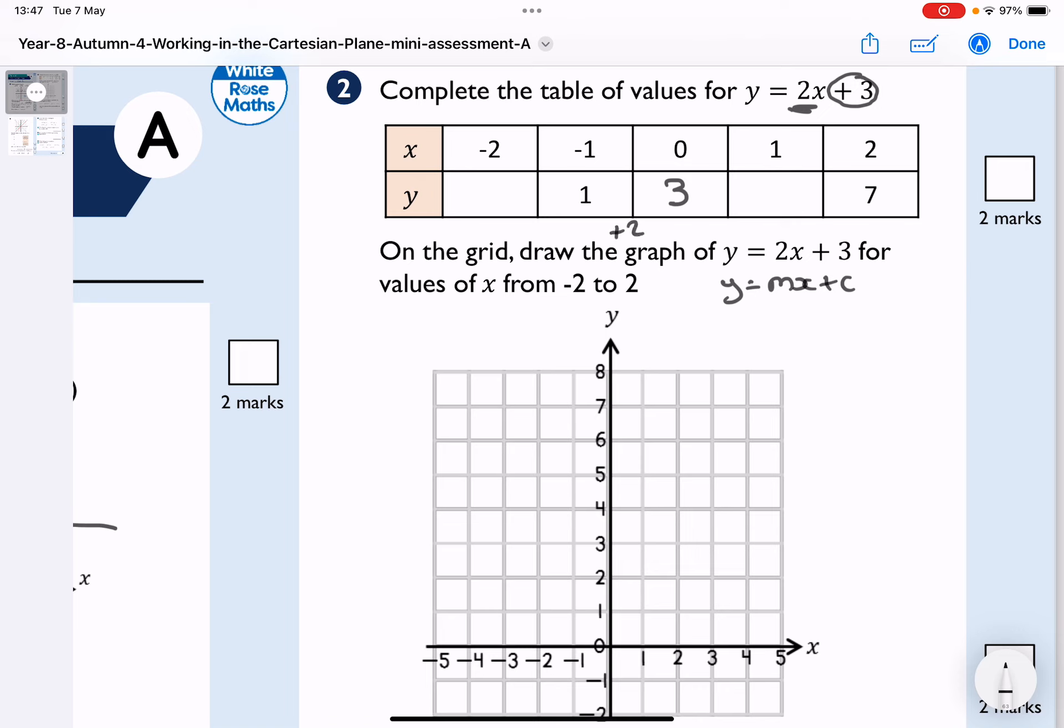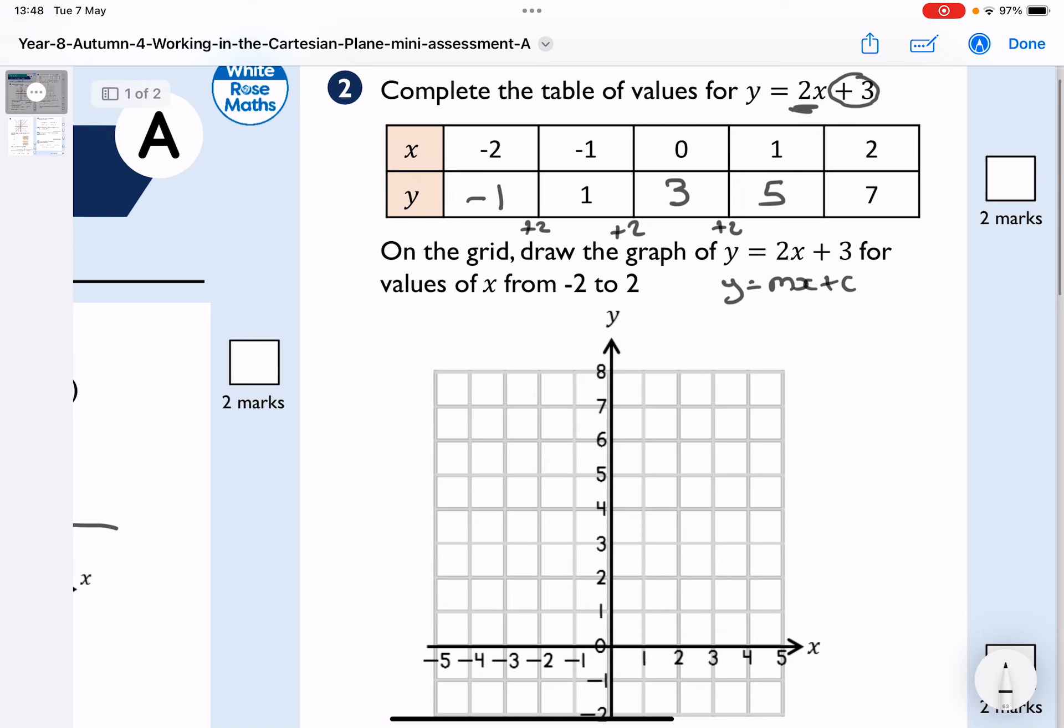So essentially, the pattern is going up by 2. So from 1 to 3 is 2. 3 plus 2 is 5. And if I go back and say, well, what number, if I add 2, gets me to 1? It's negative 1, or I could go back from 2.